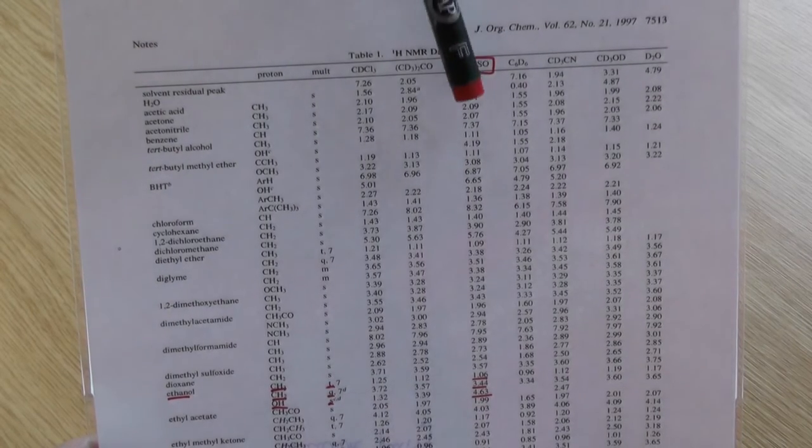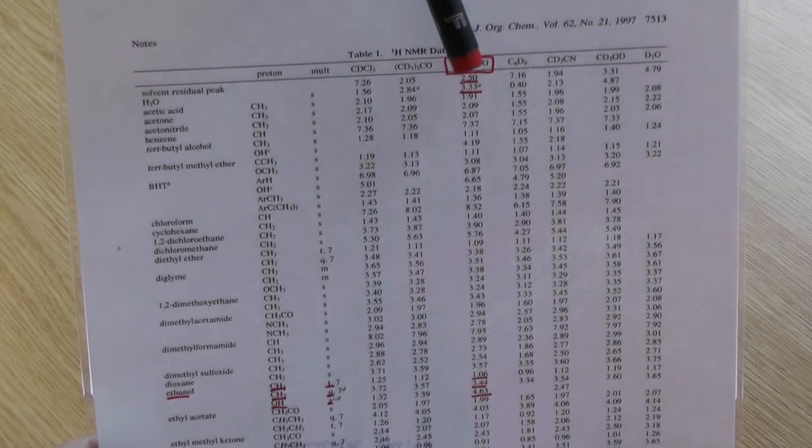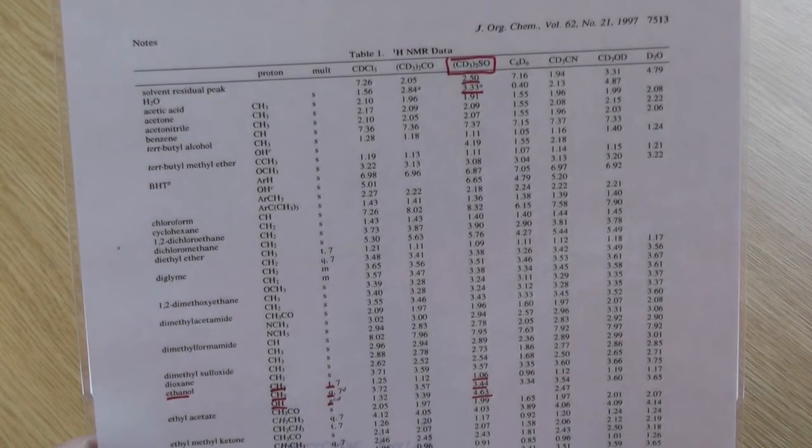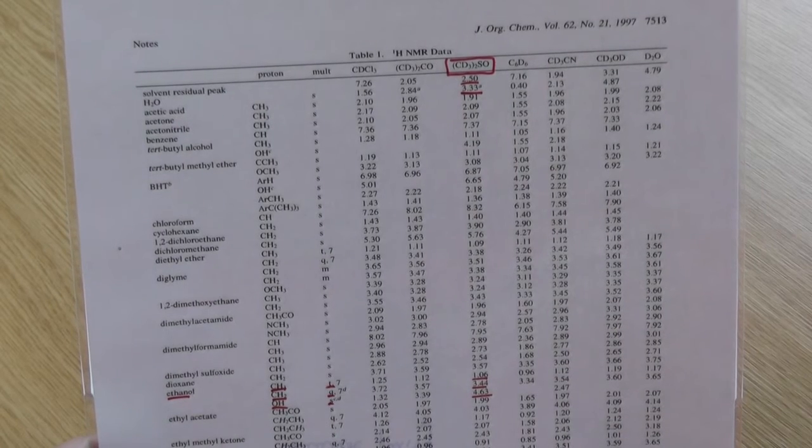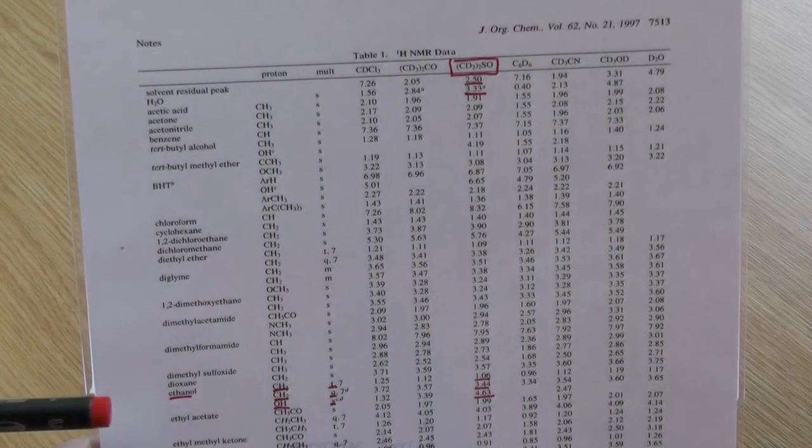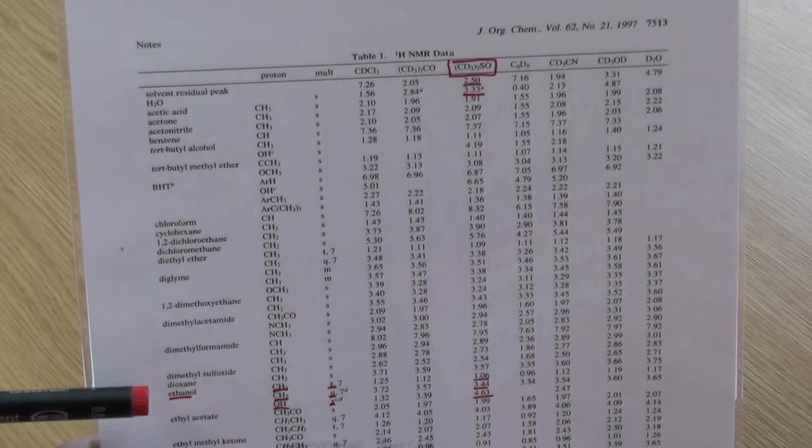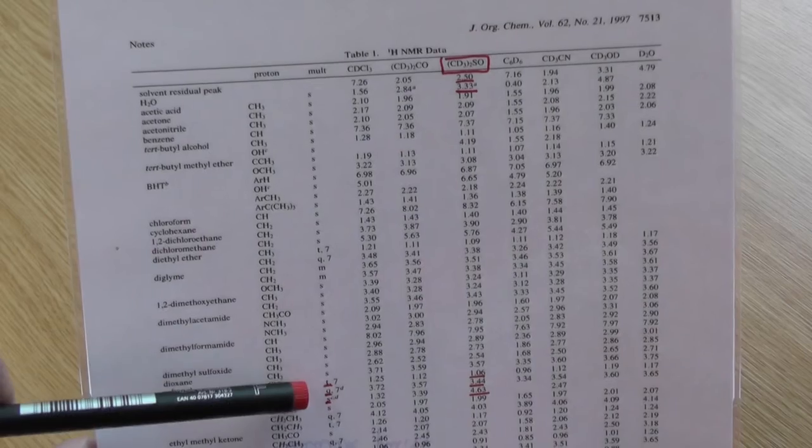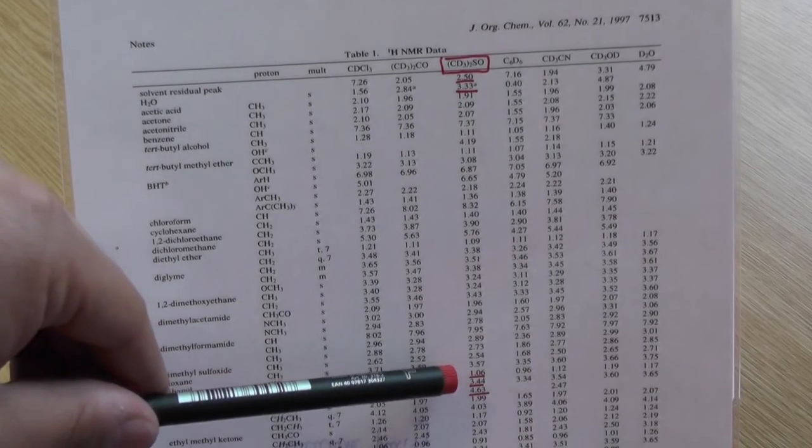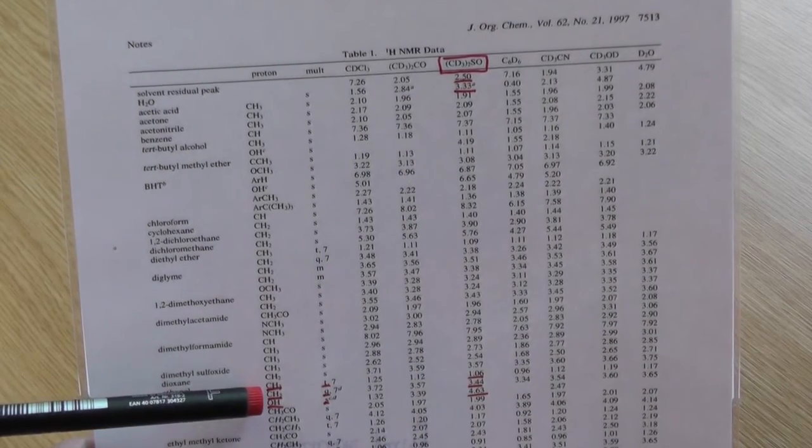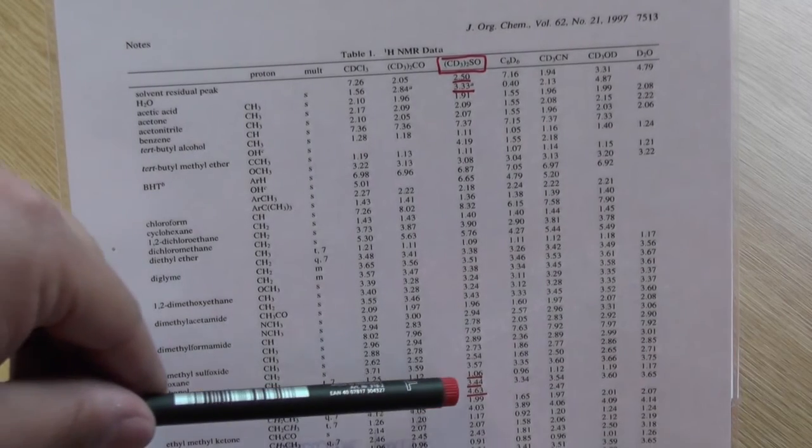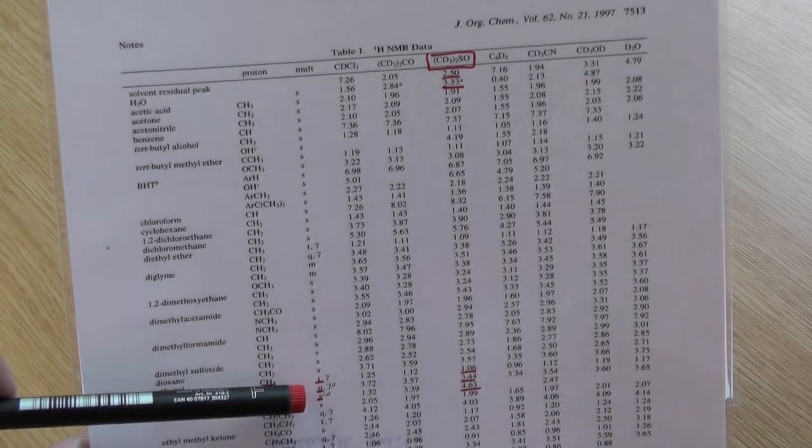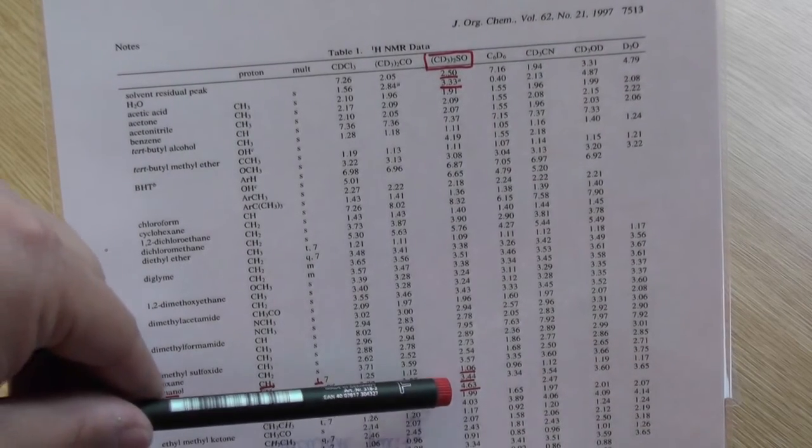So you look at the two chemical shifts, one from the solvent and one from water, and you can rule them out from your spectrum. We also did our reaction in ethanol. Looking at where ethanol is in the table, you can see that the CH3 of ethanol should give a triplet with a chemical shift of 1.06. The CH2 group should give a quartet at 3.44 and the OH group should give a singlet at 4.63.